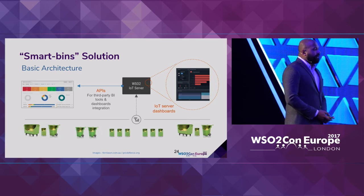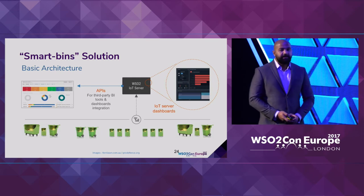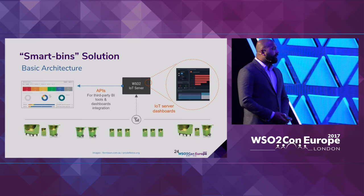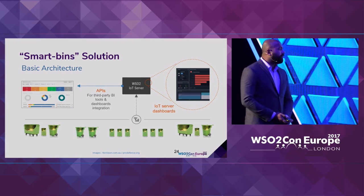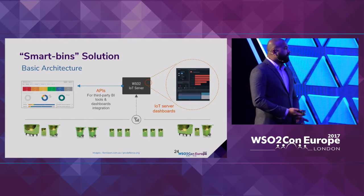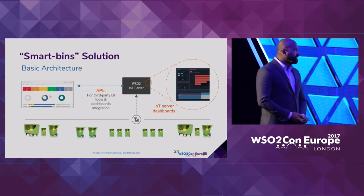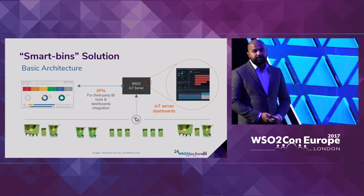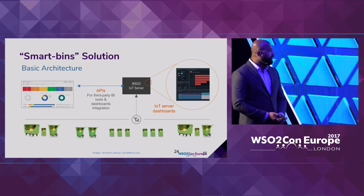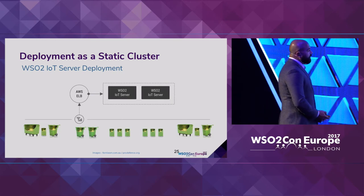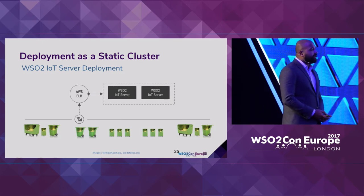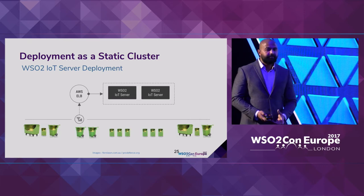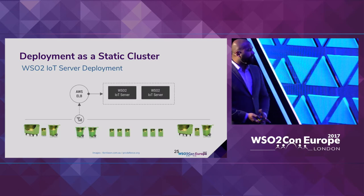They are using two types of dashboards: the default dashboards provided by WSO2 IoT server, and since all capabilities are exposed as APIs, they also integrate the solution to push information to third-party business intelligence tools or dashboards. The actual deployment has two IoT server instances — a static cluster, not elastically scaled — also Amazon-based.